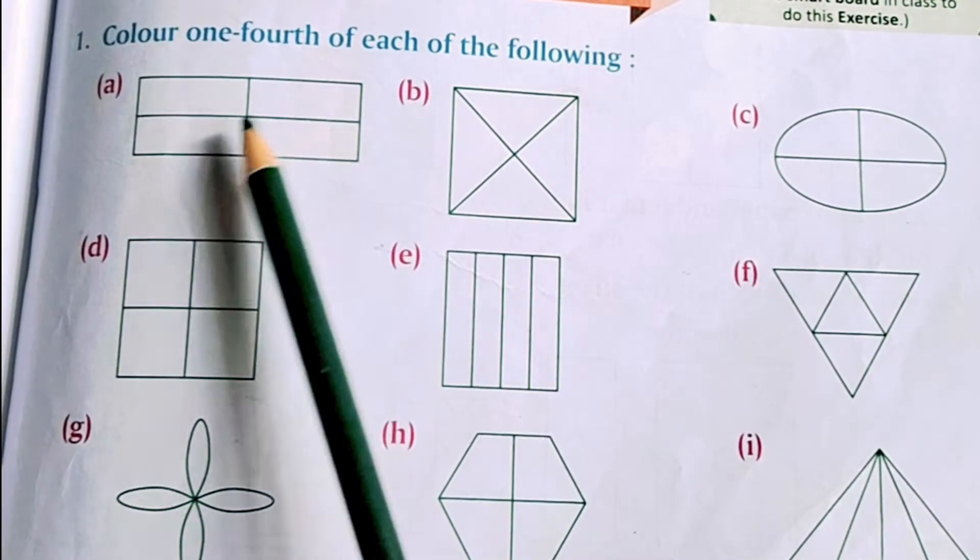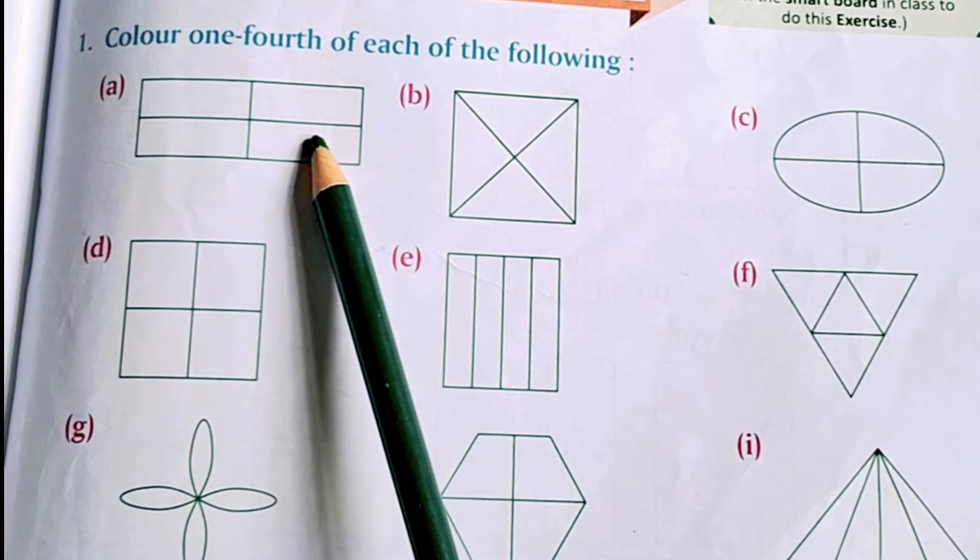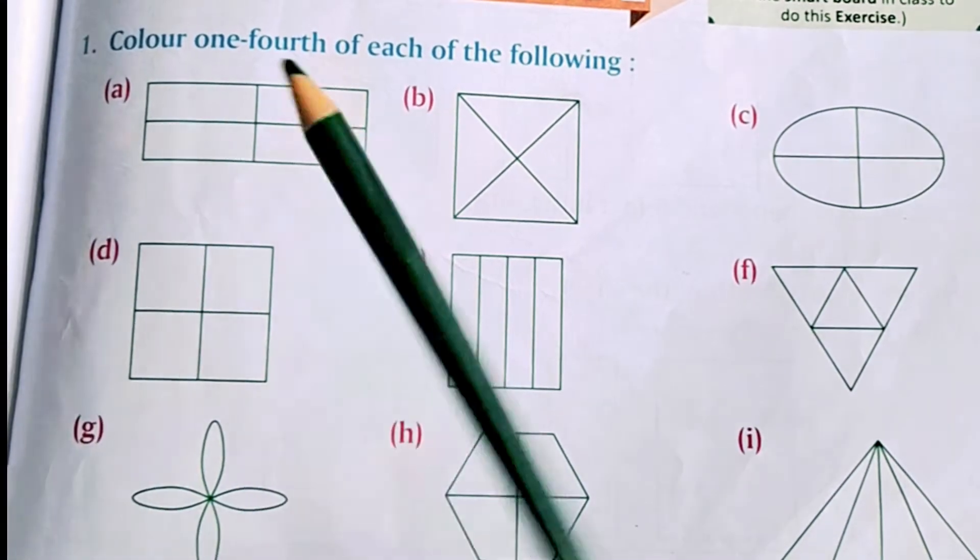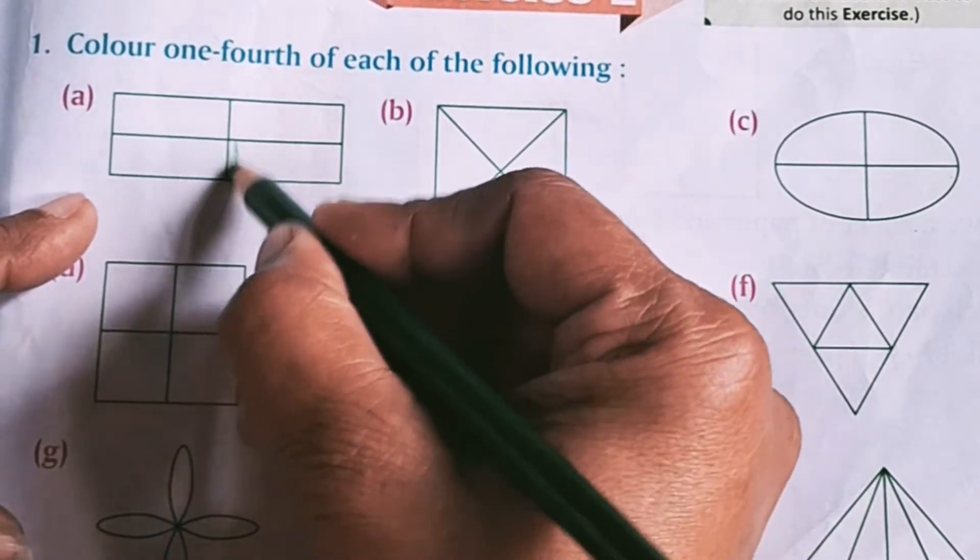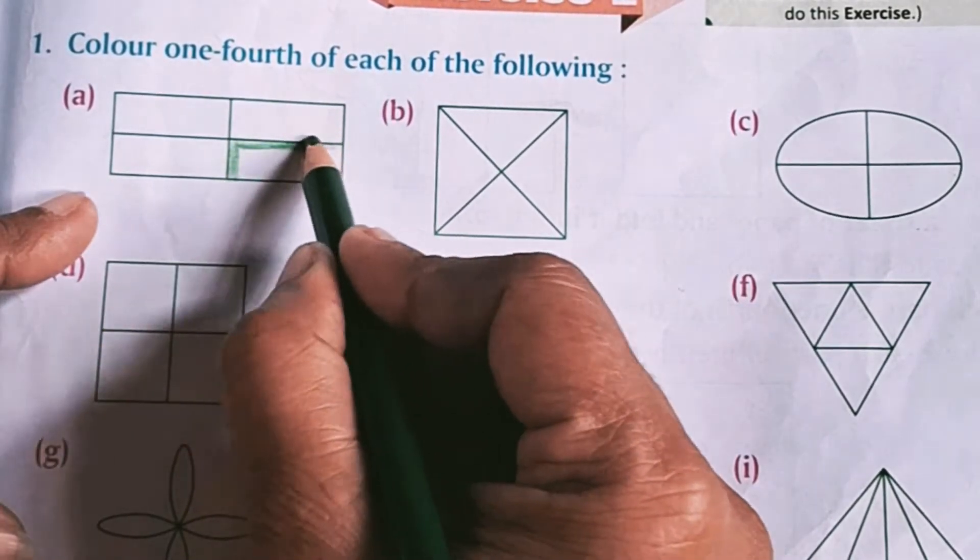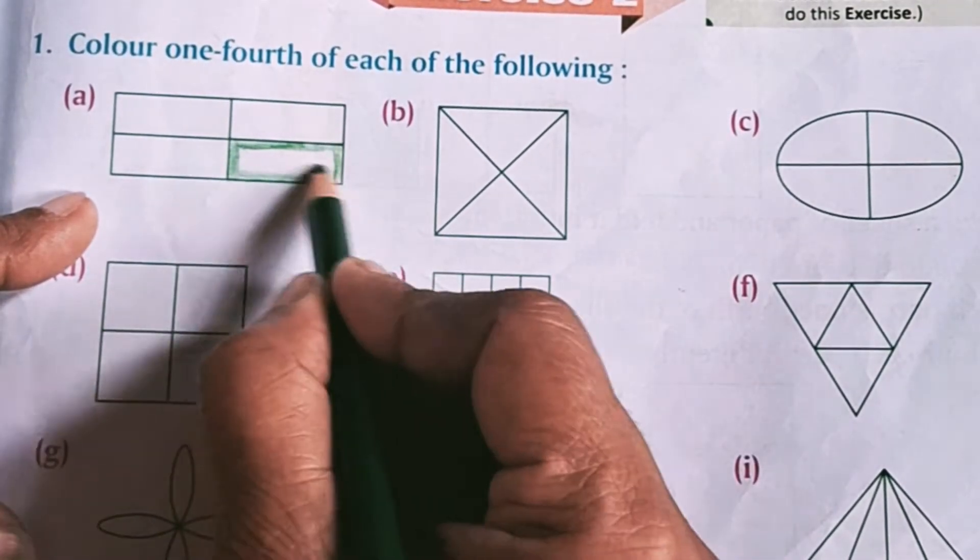See, this is a rectangle and it has four parts. But you have to color only one part out of the four parts, and the colored part will be one-fourth of the rectangle.